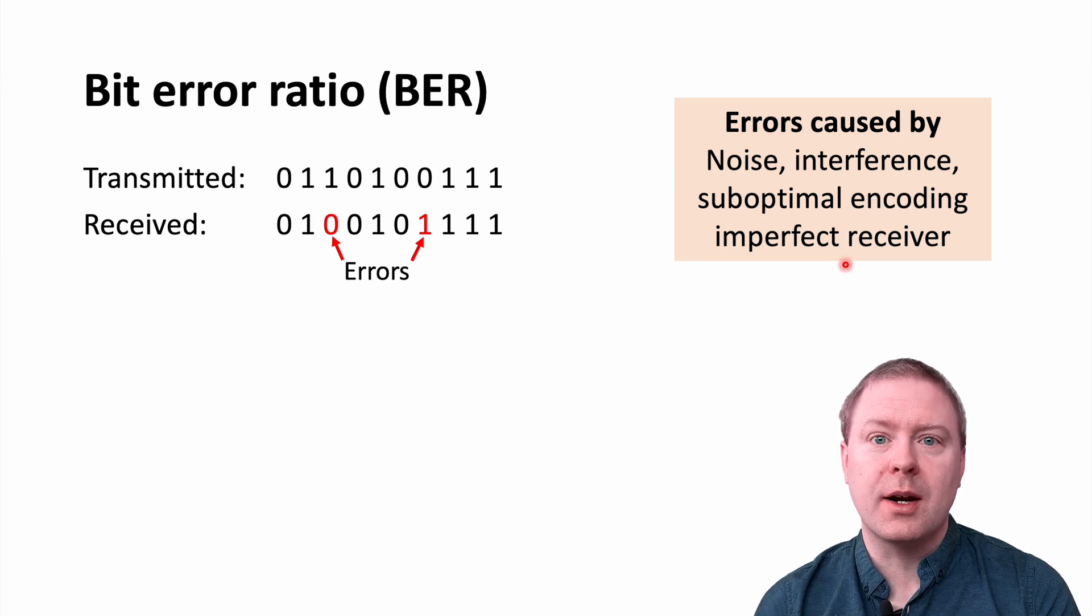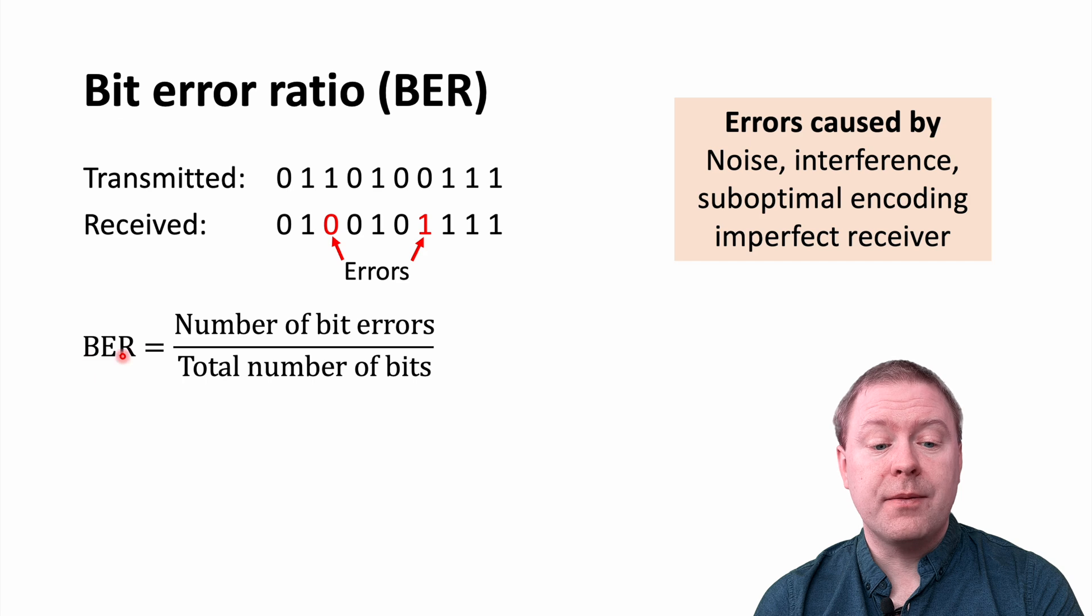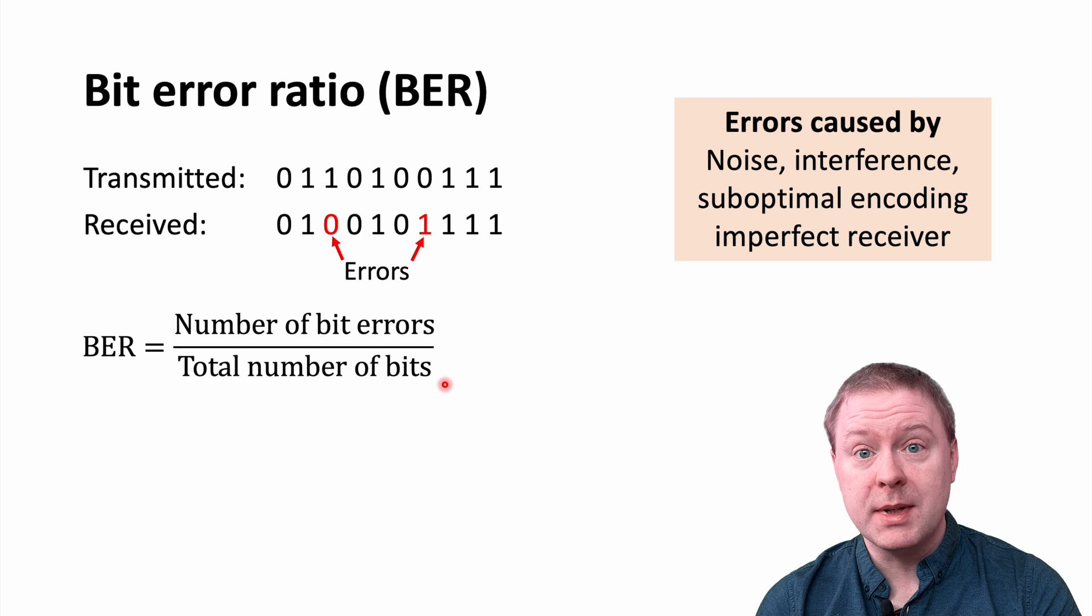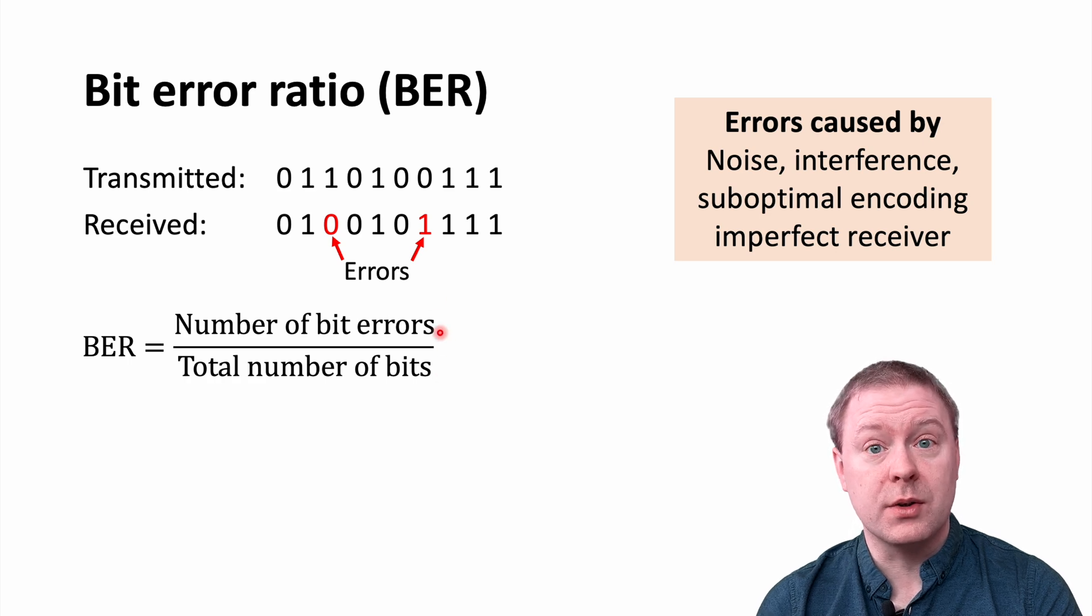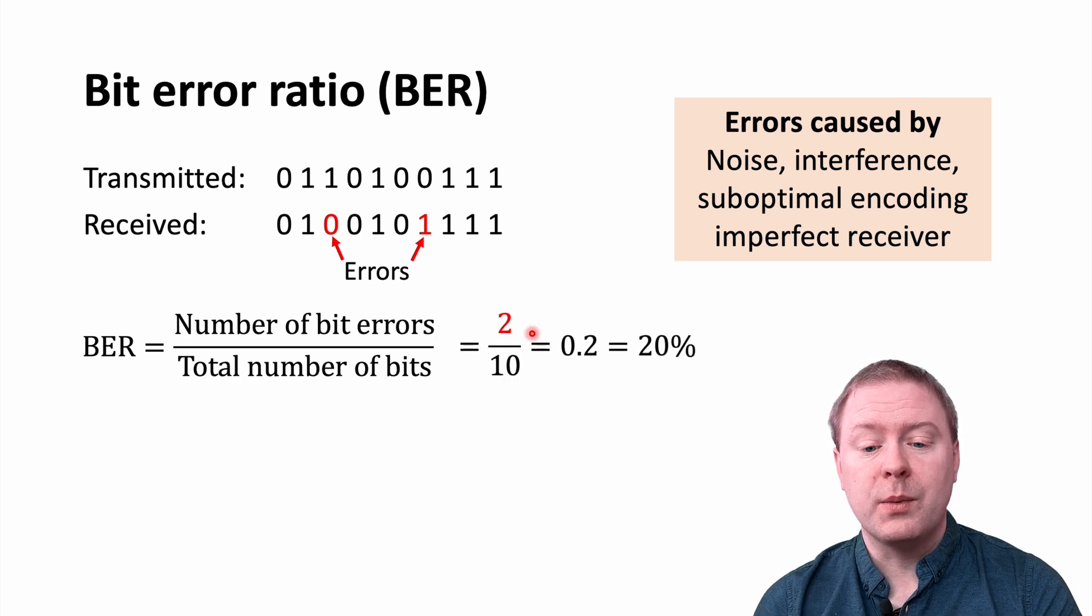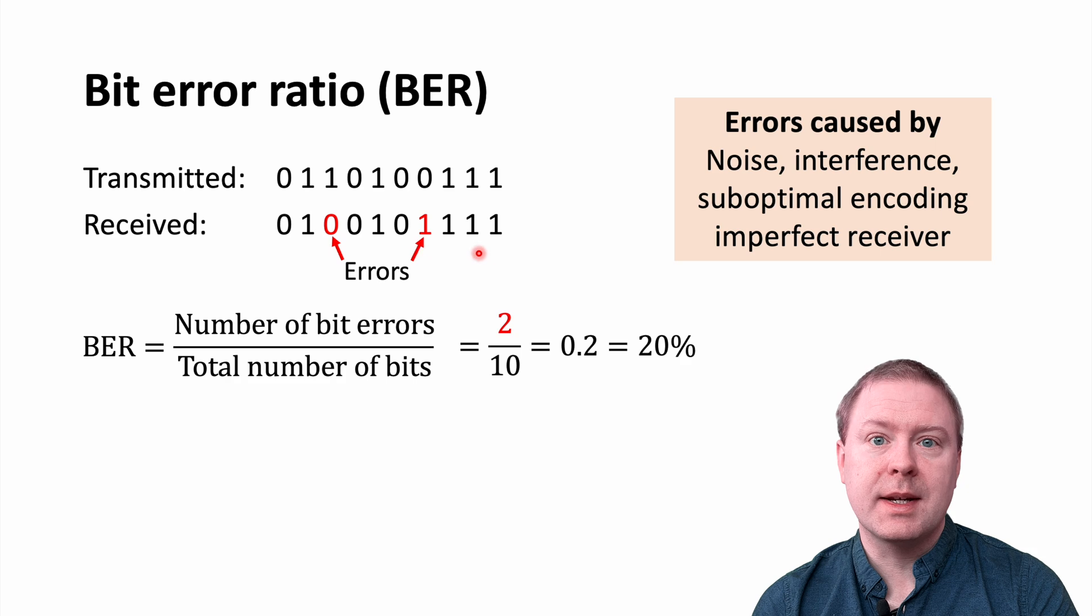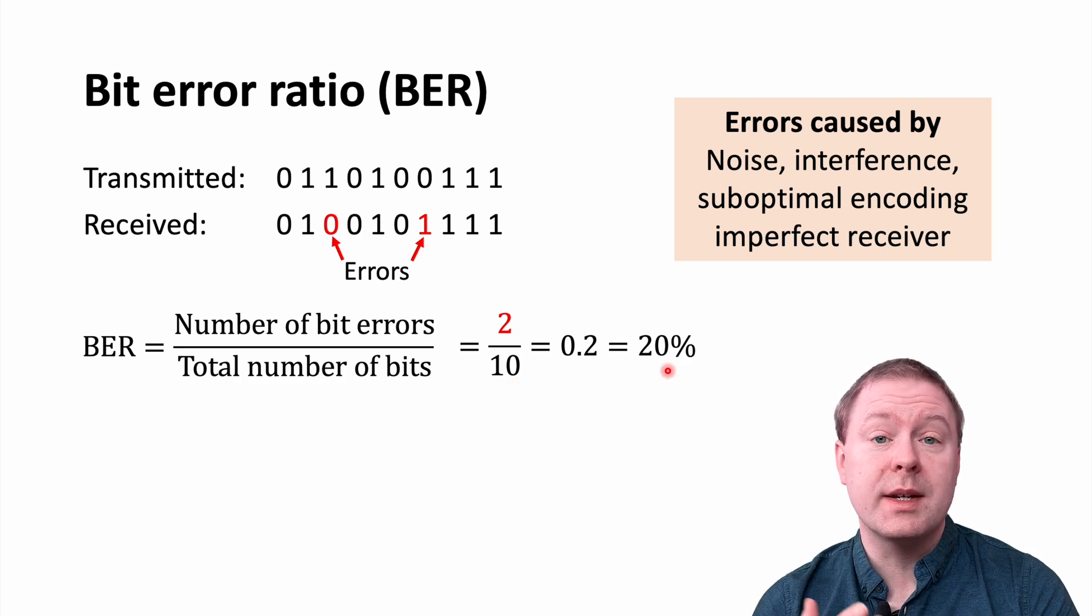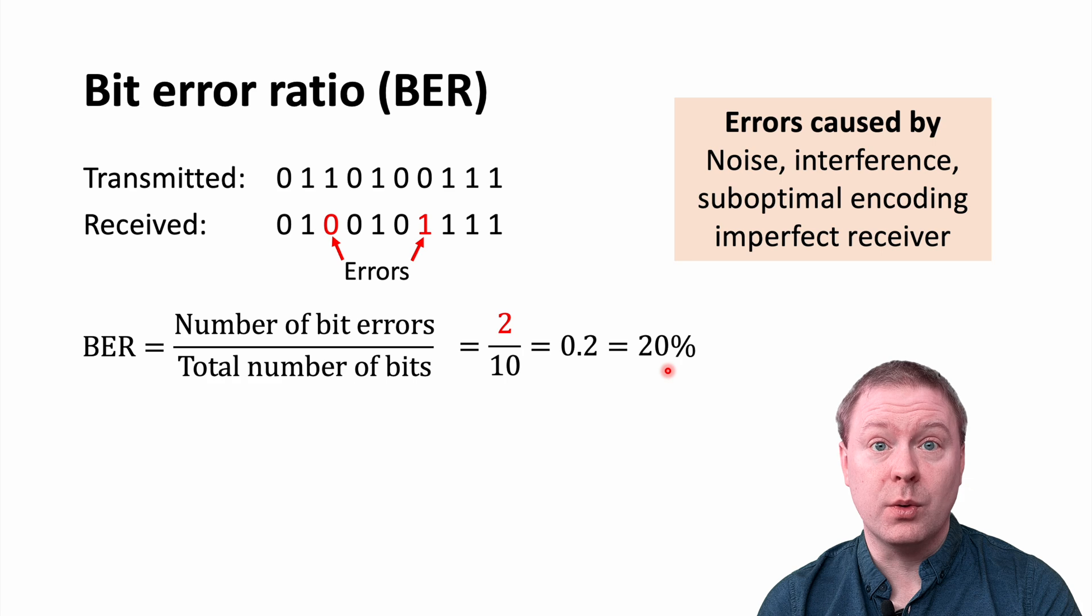So how do we compute the bit error ratio? It is defined as taking the number of bit errors and dividing by the total number of bits that you are transmitting. So this is the ratio that we consider. In this example, when we have two errors and we are transmitting 10 bits in total, we have 0.2 or 20 percent as our bit error ratio.